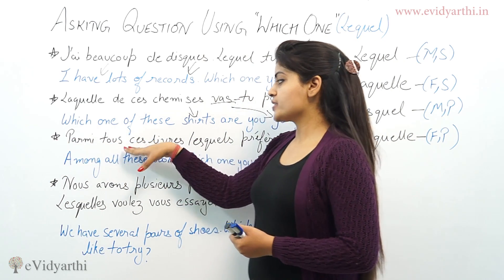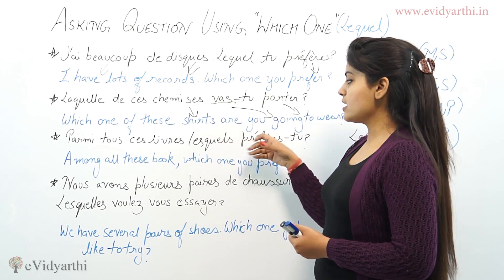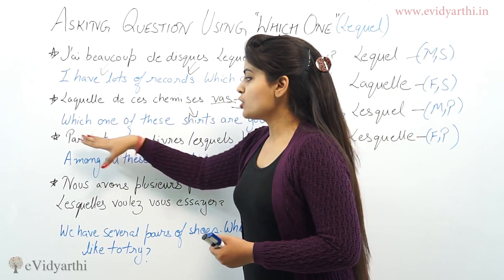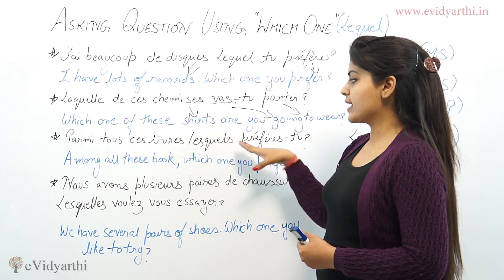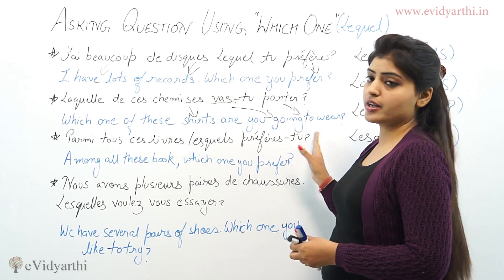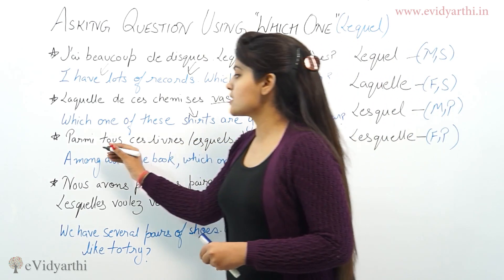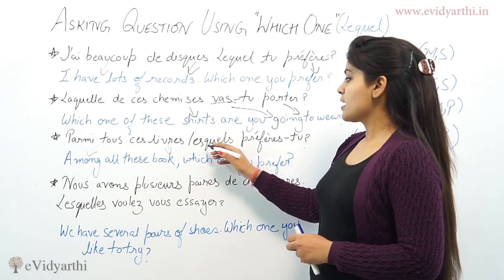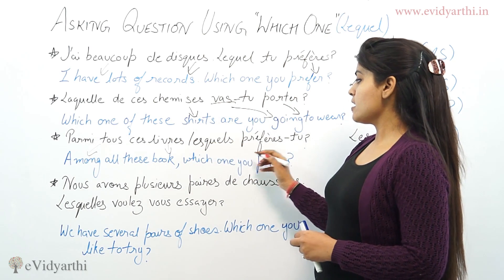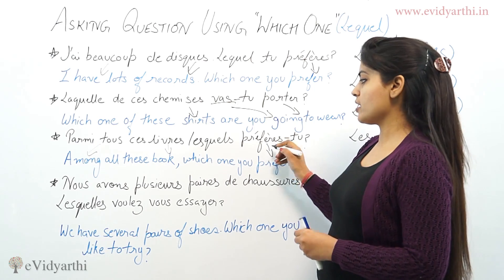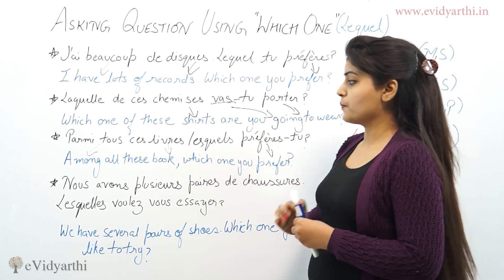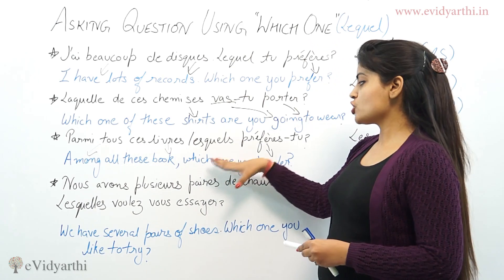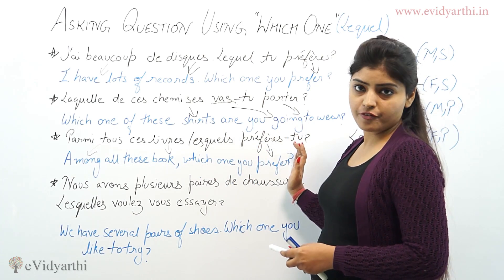Another example: 'Parmi tous ces livres, laquelle préfères-tu?' — 'Parmi tous' means 'among all', 'livre' means book, and 'préférer' means to prefer. So the sentence means: 'Among all these books, which one do you prefer?'